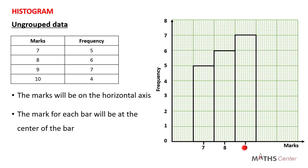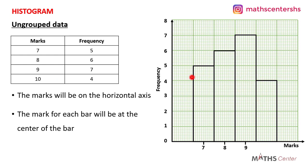The last one is mark 10 with frequency 4. We draw the bar attached to the bar for 9, with the height at 4. The mark 10 is placed at the center of the bar.